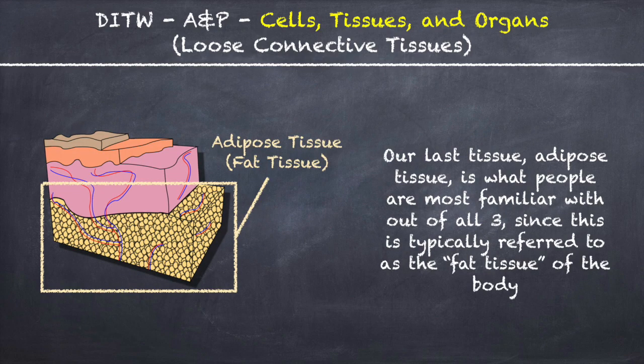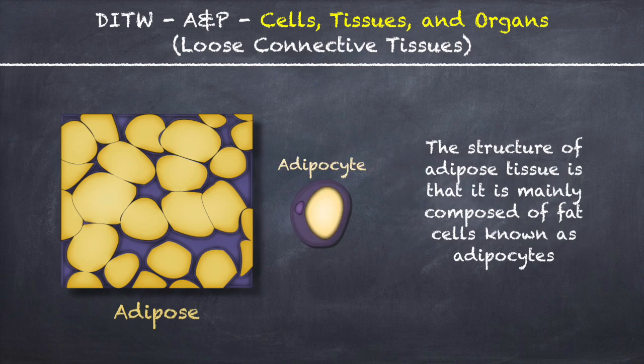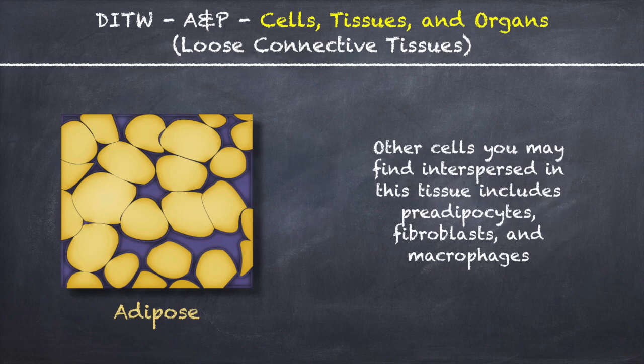Our last tissue, adipose tissue, is what people are most familiar with, since this is typically referred to as the fat tissue of the body. The structure of adipose tissue is that it is mainly composed of fat cells known as adipocytes. Other cells you may find interspersed in this tissue include pre-adipocytes, fibroblasts, and macrophages.